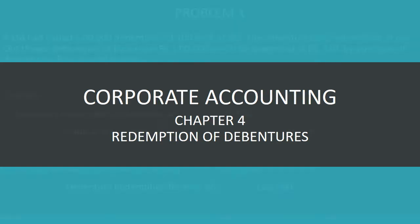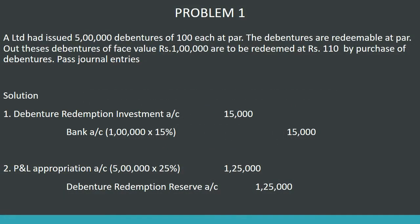The next question is: A Limited had issued Rs. 5 lakhs debentures of Rs. 100 each at par. The debentures are redeemable at par. Out of these debentures, Rs. 1 lakh are to be redeemed at Rs. 110 by purchase of debentures.